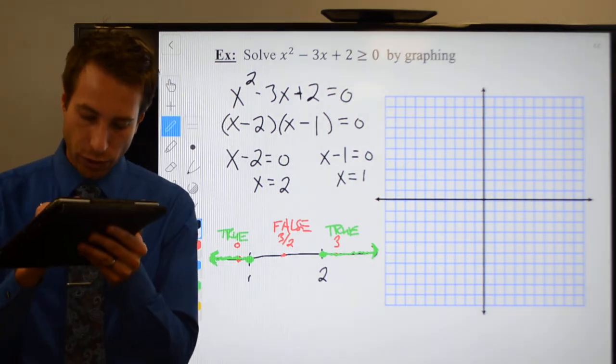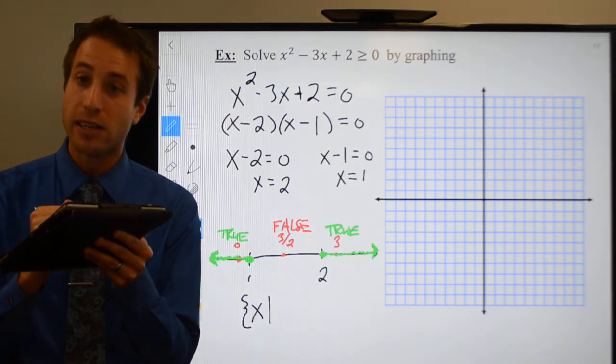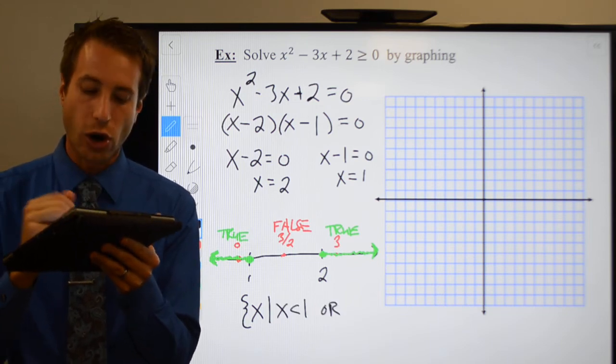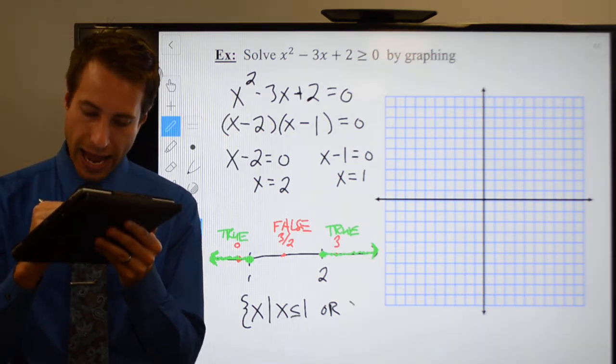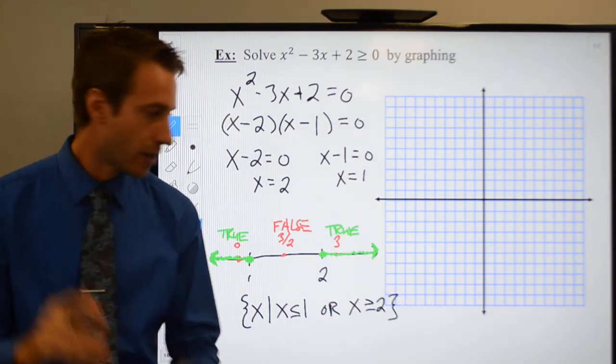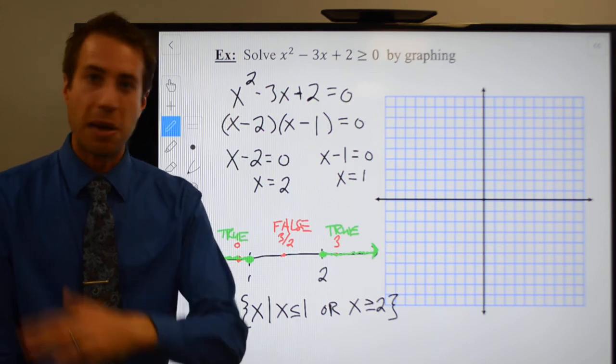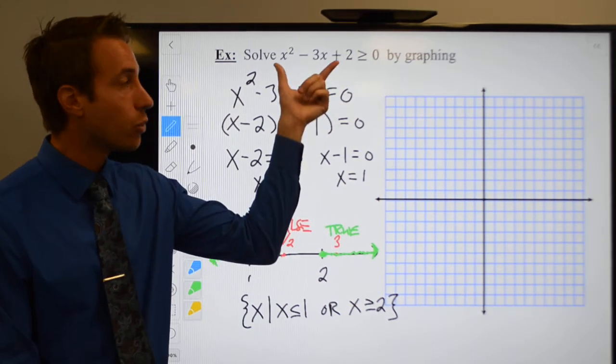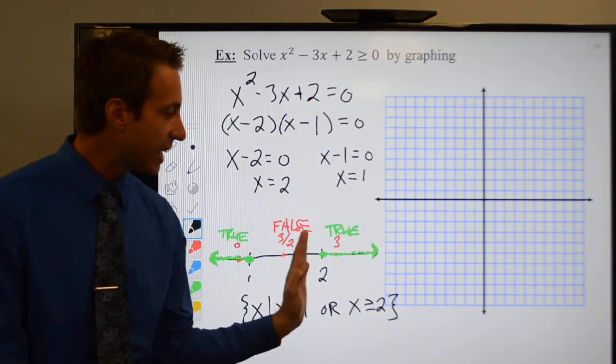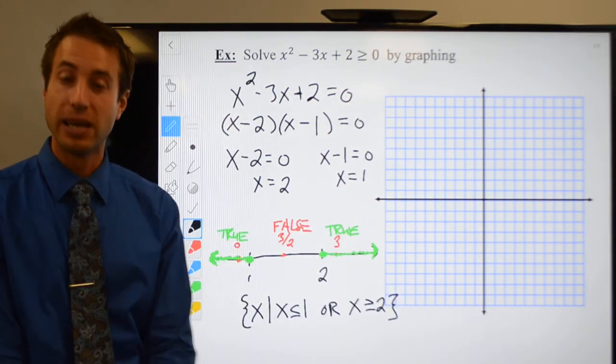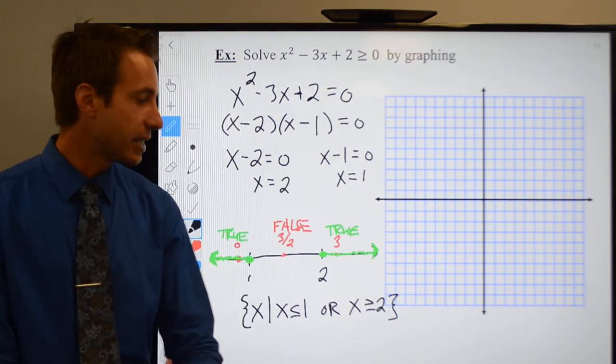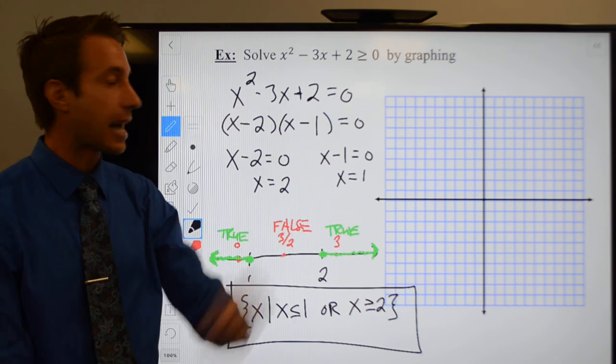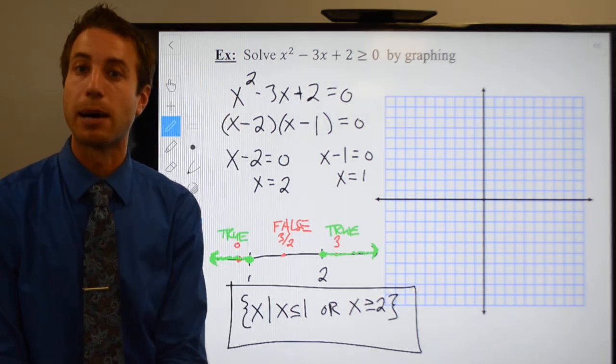Then you're going to write your interval notation. So it is a bracket, all values of x such that x is less than or equal to 1, or x is greater than or equal to 2. That represents my solution intervals. Pick any value of x less than or equal to 1 and it will be a solution to your inequality, or you could pick any value greater than or equal to 2—it also will be a solution to the inequality. This represents my answer to that quadratic inequality. Guys, head on over to the next page of the notes and we'll try a couple more of these. I'll see you there.